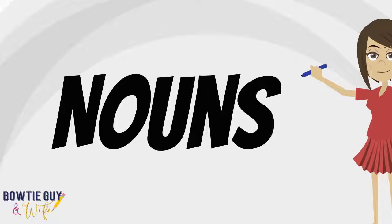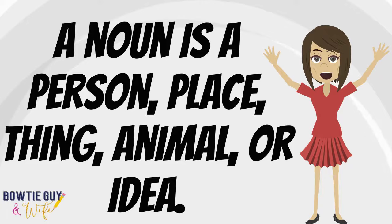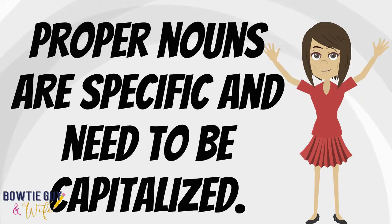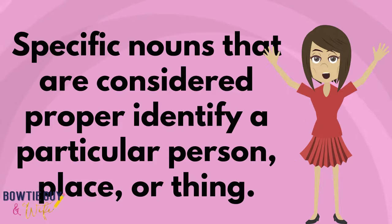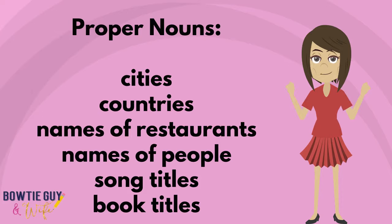Turn that frown upside down and let's talk about a noun. A noun is a person, place, thing, animal, or idea. Proper nouns are specific and need to be capitalized — they are so important they deserve to start with a capital letter. Specific proper nouns identify a particular person, place, or thing. These include cities, countries, names of restaurants, names of people, song titles, and book titles.